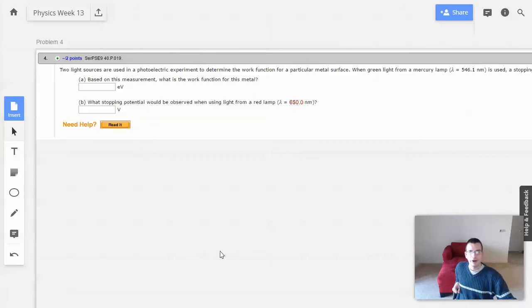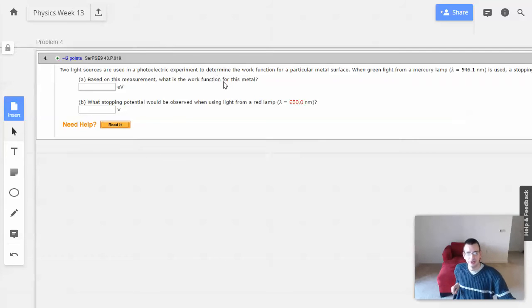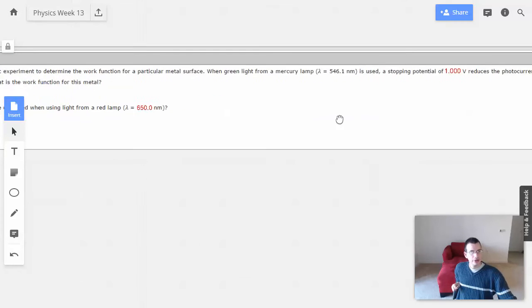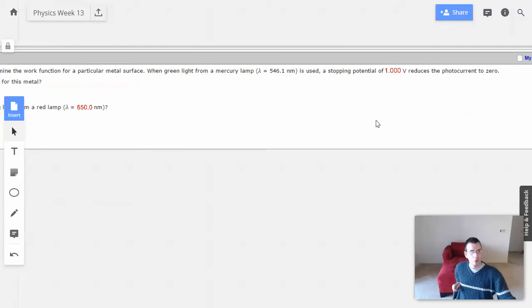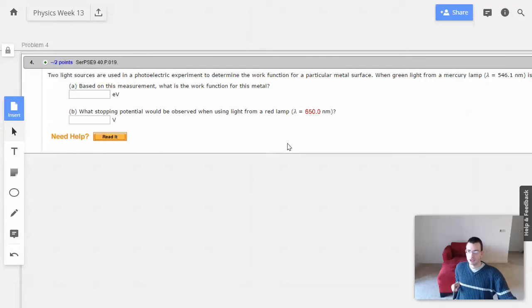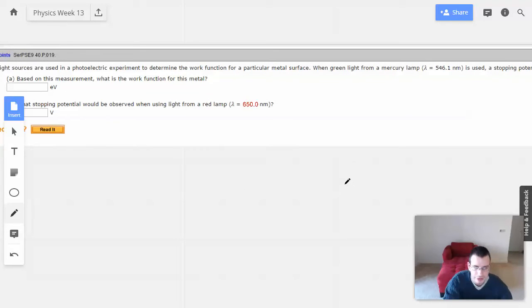Week 13, problem 4. Two light sources are used in a photoelectric experiment to determine the work function for a particular metal surface. When green light from a mercury lamp is used, a stopping potential of 1 volt reduces the photocurrent to zero.